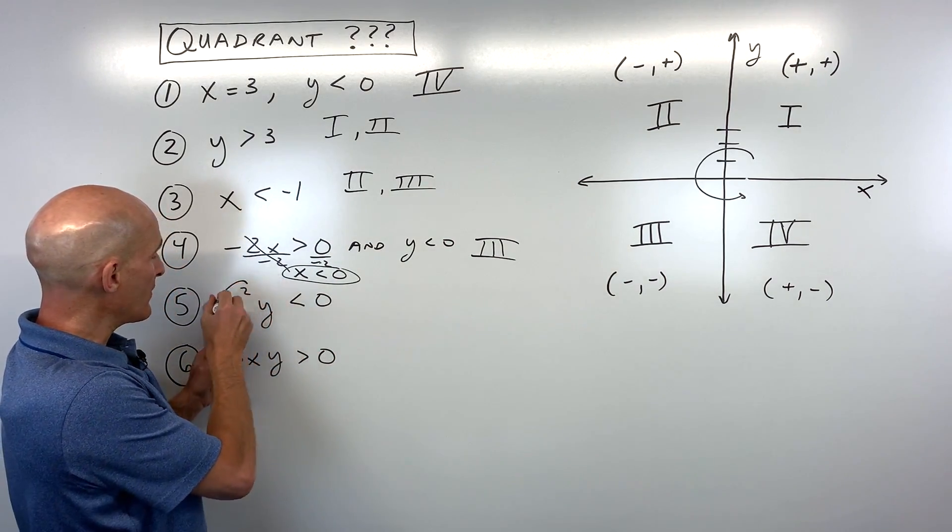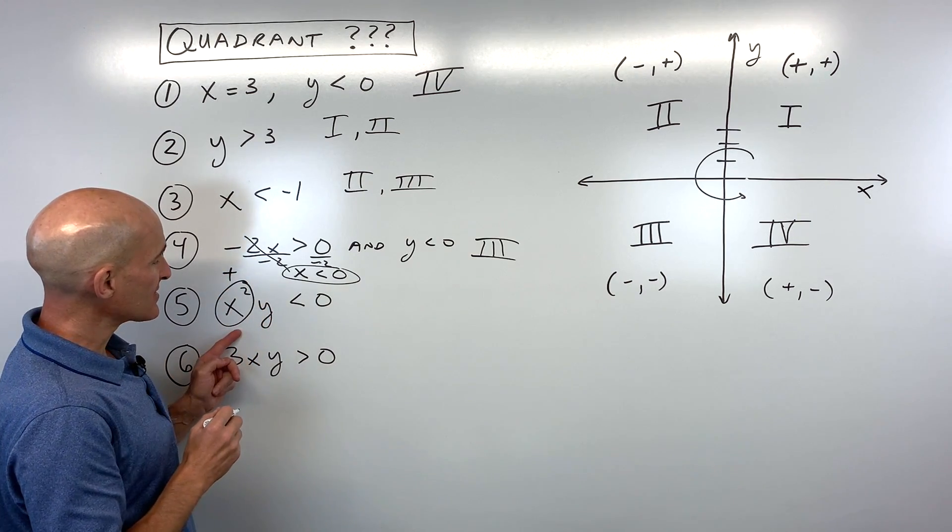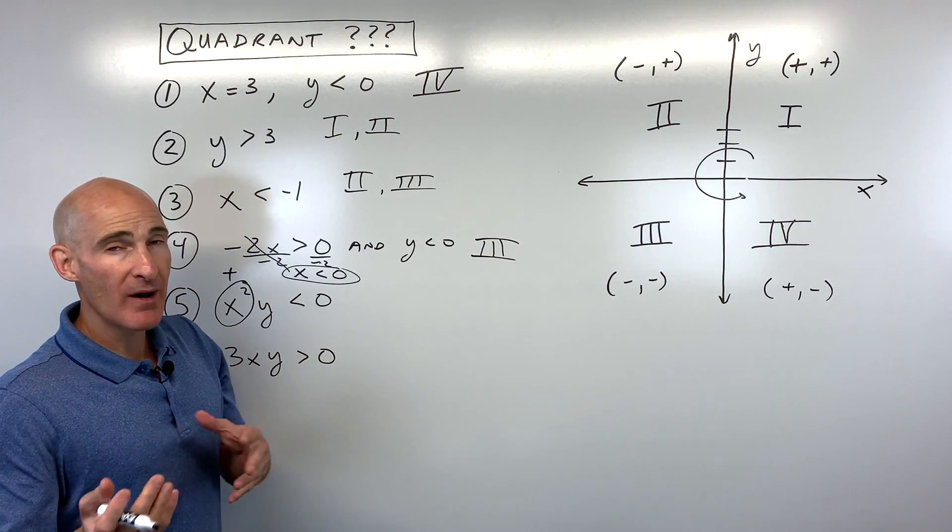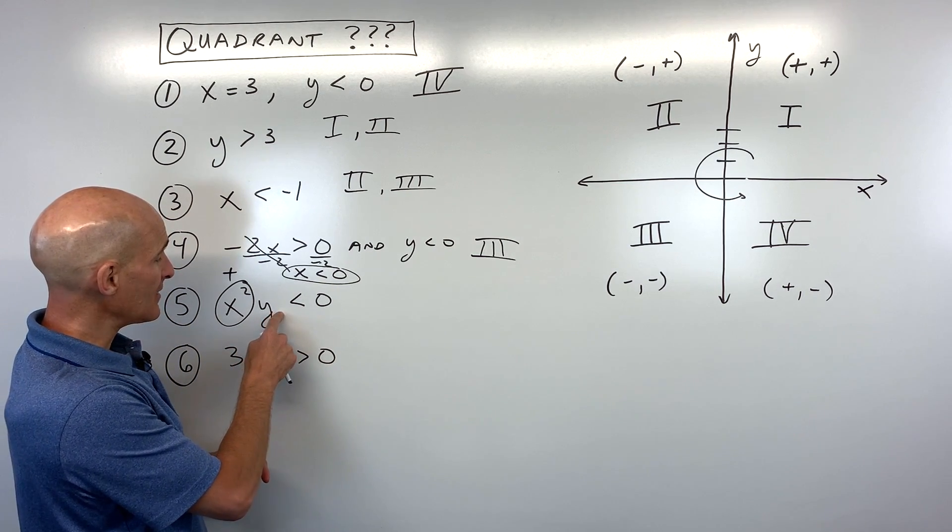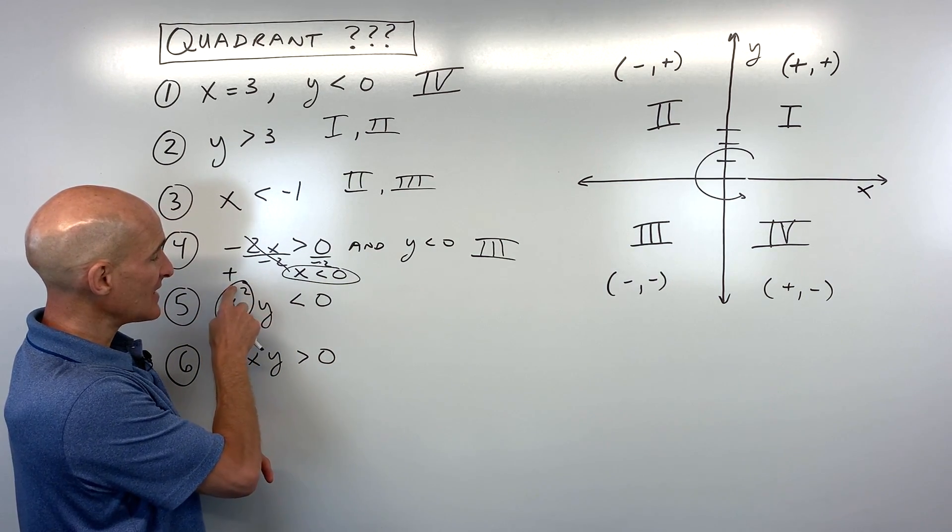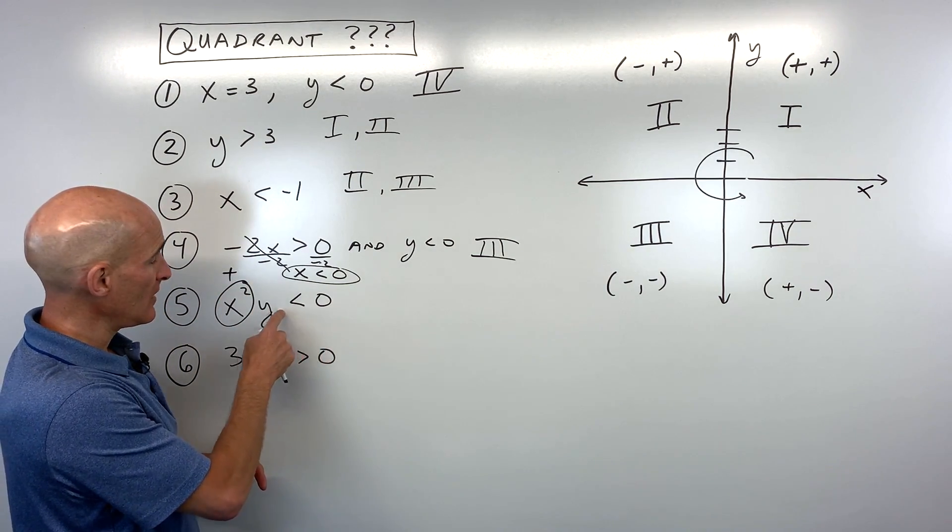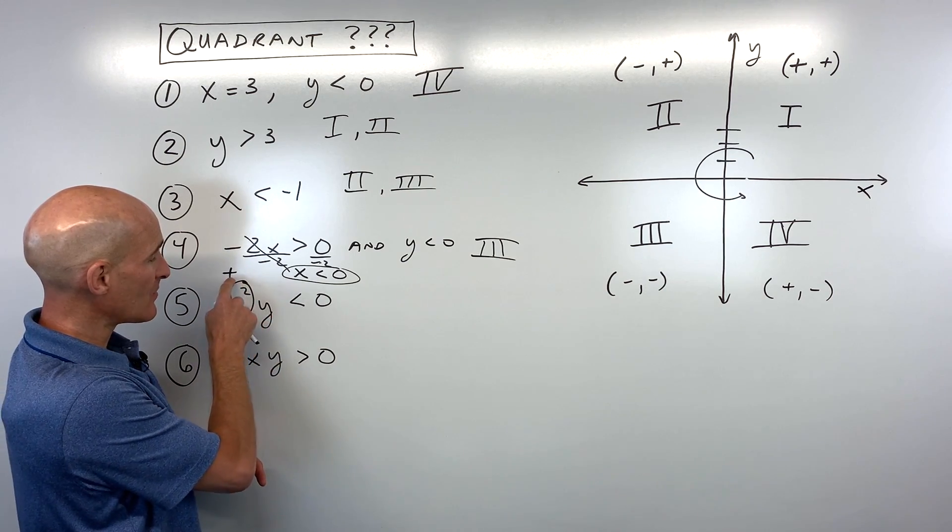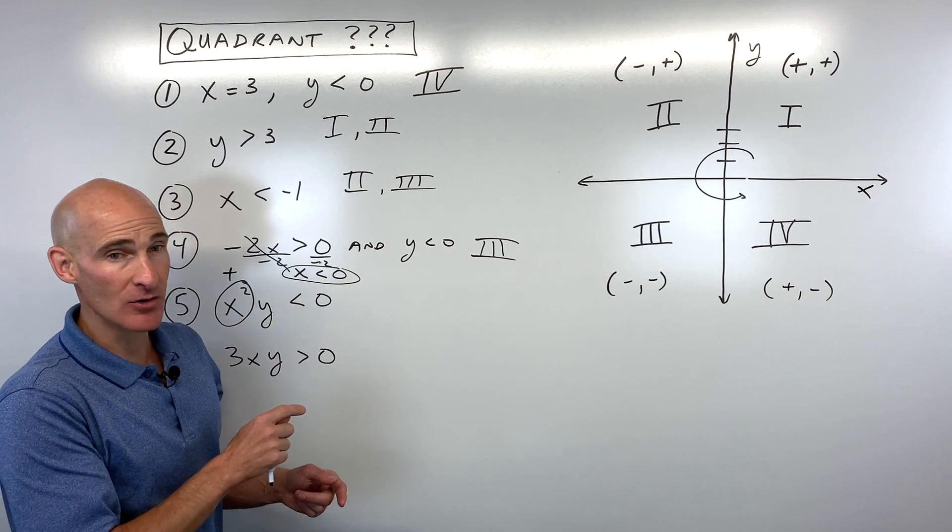So no matter what, this is going to be positive. So I'm just going to put a plus there for positive. Y, though, here could be positive or negative. If it's negative, a negative times a positive is a negative, and that's less than zero. If y is positive, a positive times a positive is positive. That's not less than zero.